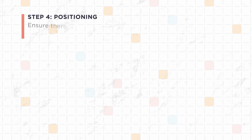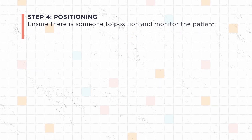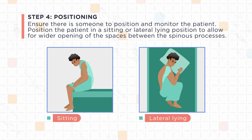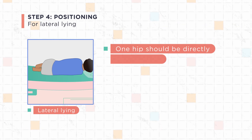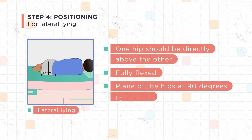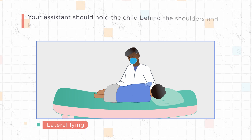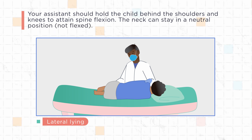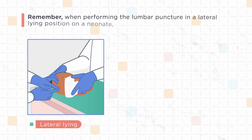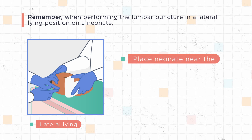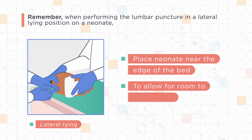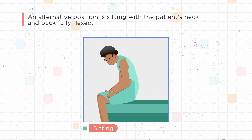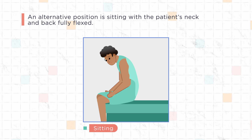Step 4: Positioning. Ensure that there is someone to position and monitor the patient. Position the patient in a sitting or lateral lying position to allow for wider opening of the spaces between the spinous processes. For lateral lying, one hip should be directly above the other, fully flexed, with the plane of the hips at 90 degrees to the floor. Your assistant should hold the child behind the shoulders and knees to attain spine flexion. The neck can stay in a neutral position, not flexed. When performing the lumbar puncture in a lateral lying position on a neonate, it's crucial to lie the neonate safely near the edge of the bed — otherwise you will have trouble collecting cerebrospinal fluid. An alternative position is sitting with the patient's neck and back fully flexed. Double-check that the child's position is maintained prior to inserting the needle.